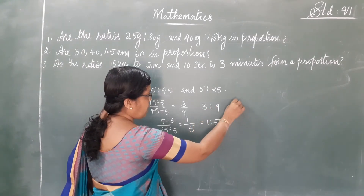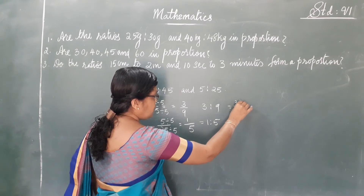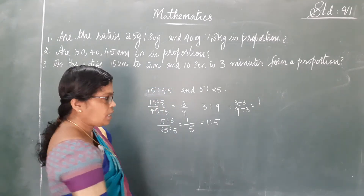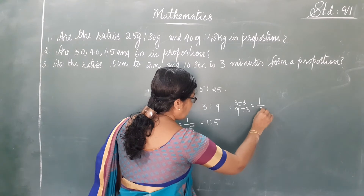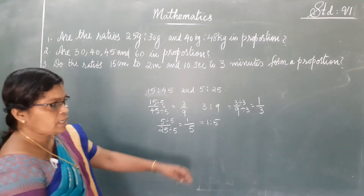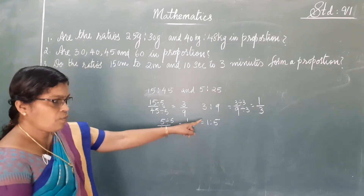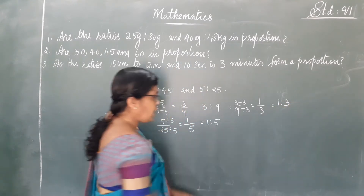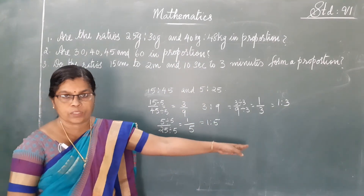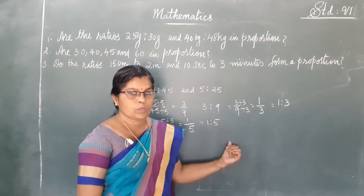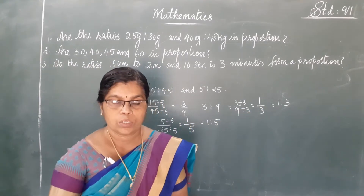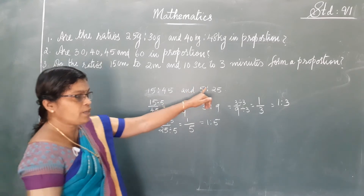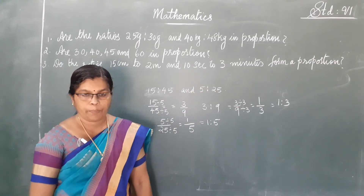Here you see, 3 is to 9 — we can divide by 3 again. In 3 there is one 3, and in 9 there are three 3's. So the ratio is 1 is to 3. And here we have 1 is to 5. So the ratios are not same — 1 is to 3 and 1 is to 5. Therefore, 15 is to 45 and 5 is to 25 are not in proportion.